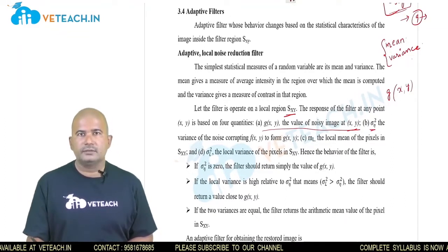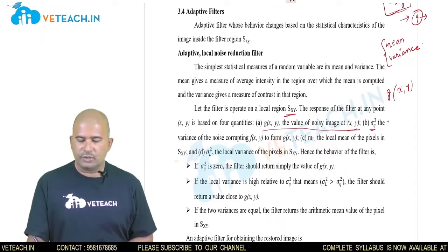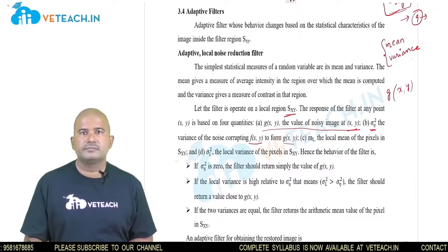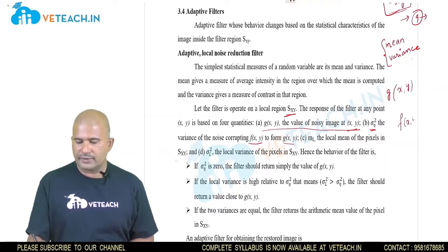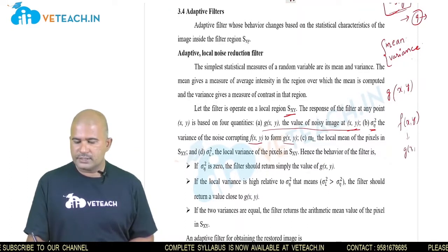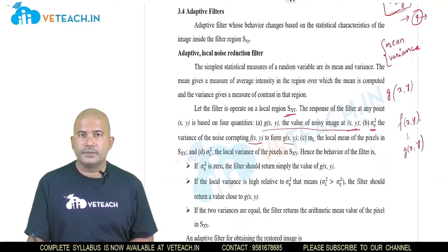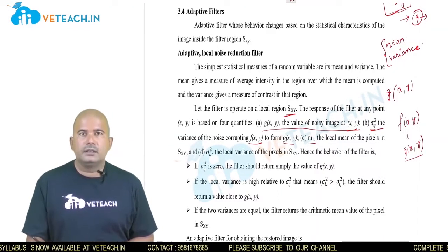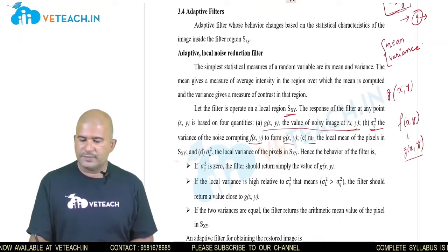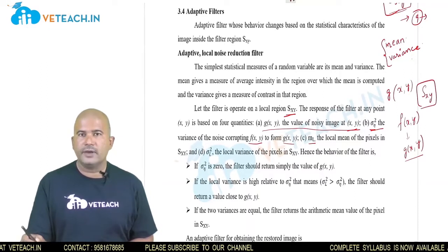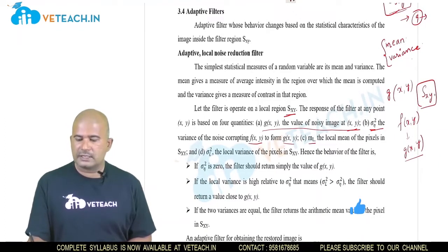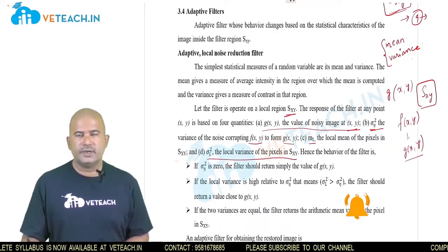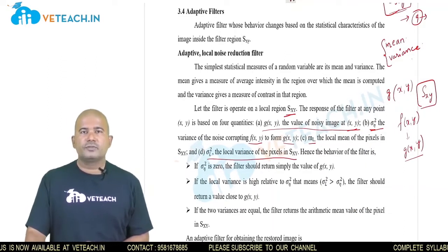The second quantity is sigma_n squared, which is the variance of the noise. If you know the model of the noise, then the variance of the noise in image f(x,y) is known. Because of this noise, f(x,y) is converted to g(x,y) — meaning our original image f(x,y) is contaminated with noise, and the resultant image is g(x,y). The third quantity is m_L, the local mean of the pixels in region s(x,y). The fourth quantity is the local variance of the pixels in s(x,y). Based on these four quantities we will design the filter.